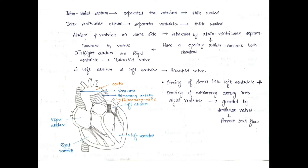The septum between the two atria is called the inter-atrial septum and it is thin. The septum between the two ventricles is called the inter-ventricular septum. The two atria are separate and the two ventricles are separate. However, on one side, the right atrium and right ventricle are connected, and on the other side the left atrium and left ventricle are connected.